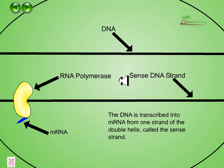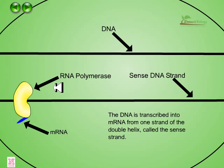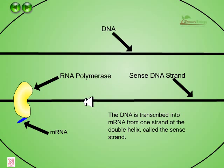This is the DNA part. This is the sense DNA strand and this is the antisense DNA strand. RNA polymerase can sit on and produce the mRNA molecule from this DNA. The DNA is transcribed into mRNA from one strand of the double helix called the sense strand.